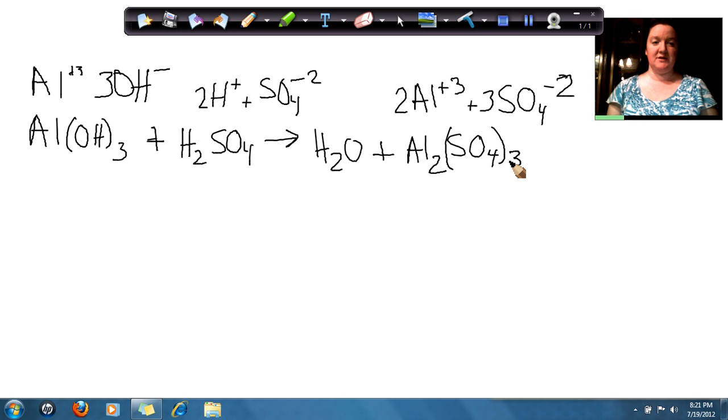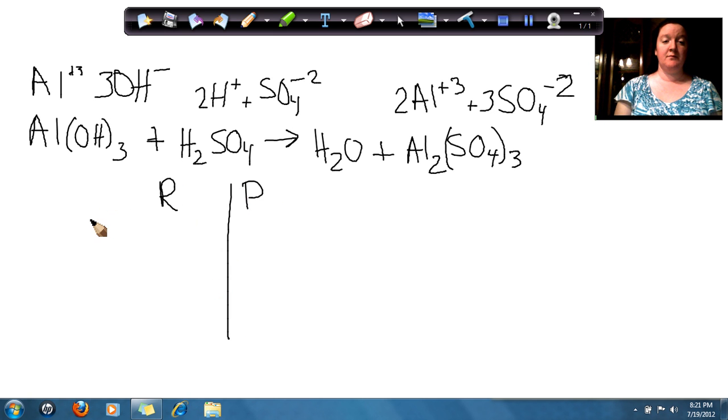So now we have our chemical equation. Now let's see if we can balance it. So we're going to start out with our reactants and our products. We have aluminum as our metal, we have sulfur as our non-metal, and then we have hydrogen and oxygen.